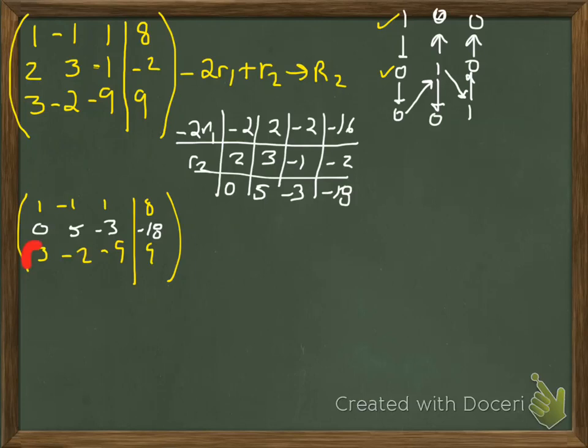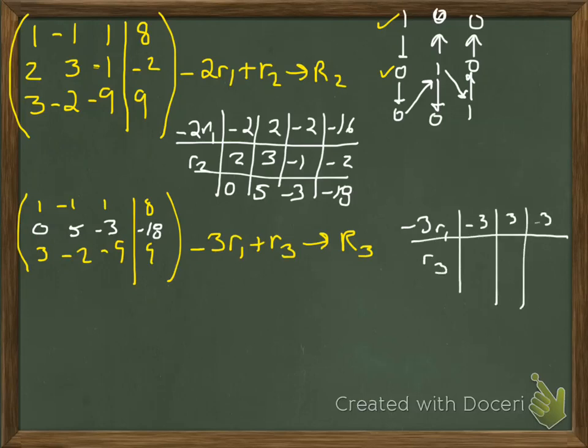Now I would like this to be a 0, this 3 to be a 0. It is in column 1, so to make a 0 in column 1, I need to use row 1. And I'm going to do the opposite of 3, which is negative 3. So we're going to use row 1, so negative 3, row 1, add that to row 3, and replace row 3. Okay, so we'll write down the steps over here, and then we'll go ahead and add those and replace. So 0, 1, negative 12, negative 15.